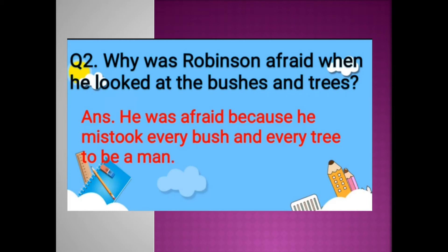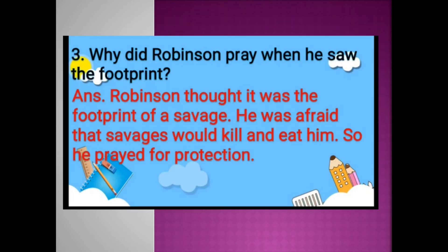Next: Why was Robinson afraid when he looked at the bushes and trees? He was afraid because he mistook every bush and every tree to be a man. Why did Robinson pray when he saw the footprint? Robinson thought it was the print of a savage. He was afraid that savages would kill and eat him, so he prayed for protection.